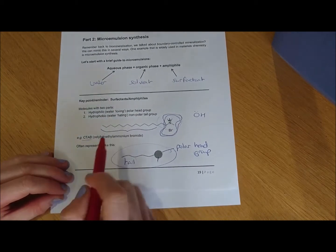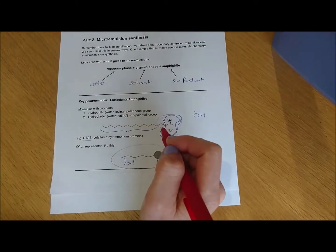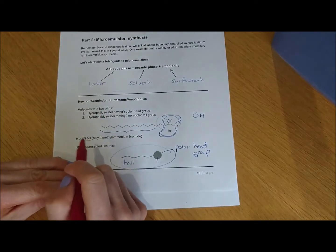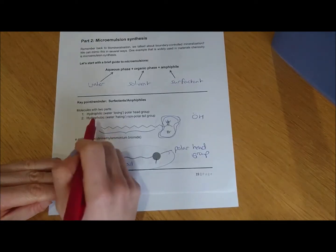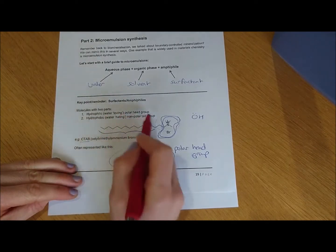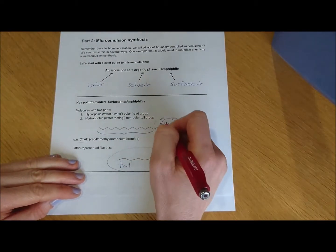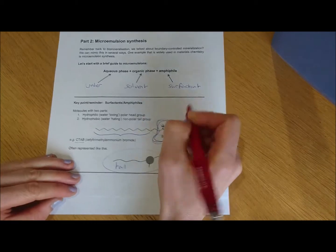Just stepping sideways for a second into surfactants and amphiphiles. These are molecules with two parts. So you have the hydrophilic, the water-loving polar head group. This is normally something charged. So you might get, for this example, an ammonium group.